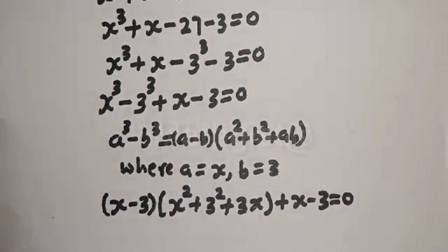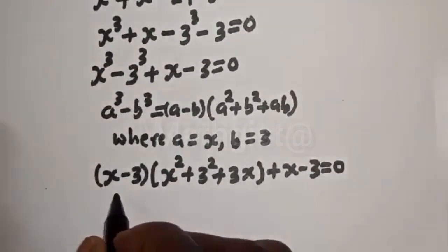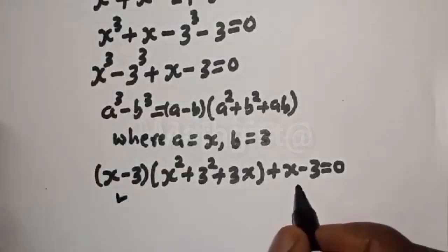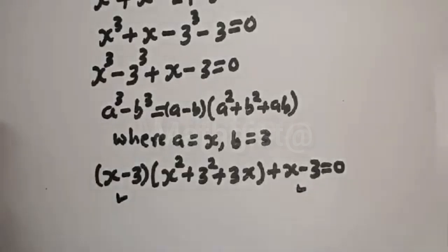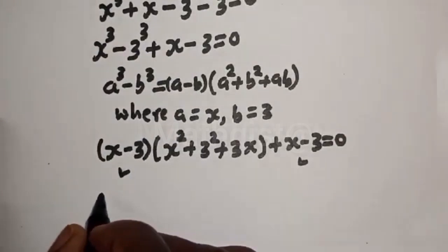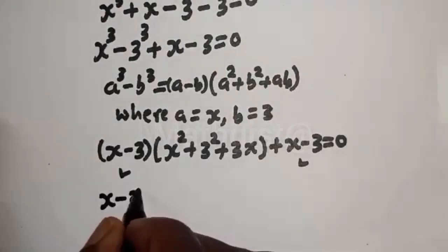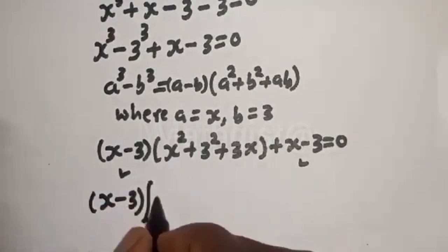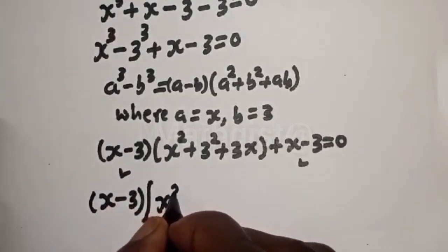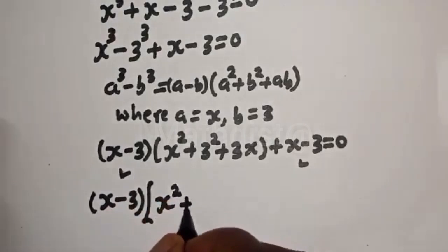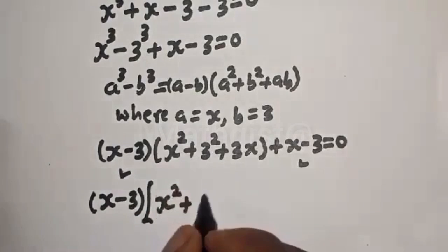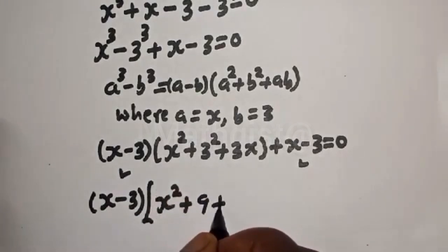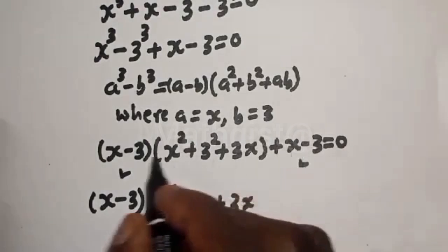s minus 3 is common; let's bring it out. We get (s − 3)(s² + 9 + 3s) = 0, which is (s − 3)(s² + 3s + 9 + 1) — completing the factored form with the remaining term.